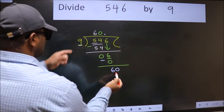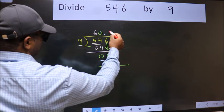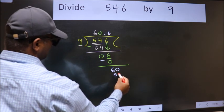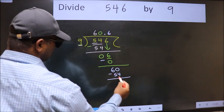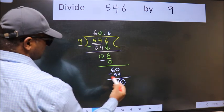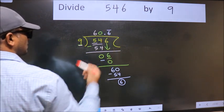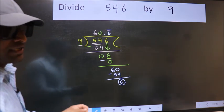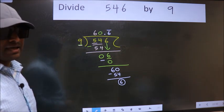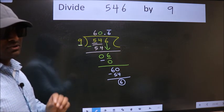A number close to 60 in 9 table is 9×6=54. Now we subtract, we got 6 again. That means we get bar on this number. Did you understand where the mistake happens? You should not do that mistake.